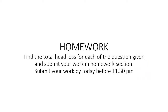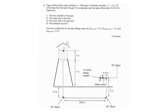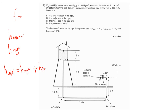For your homework, find the total head losses for each of the questions given in your homework section, due before 11:30 p.m. This question you have already worked on before to find the value of F. Now you need the continuation — to solve H_minor and H_major, and to sum up all the total losses in the pipe, which is H_major plus H_minor. H_minor equals KL times V² over 2G, and H_major equals F times L over D times V² over 2G.